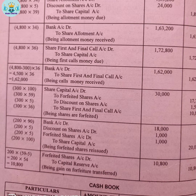However, 300 shares did not pay the first and final call. So the bank actually received money from only 4500 shares. Therefore 4500 × 36 is the actual amount received in the bank for the first and final call.